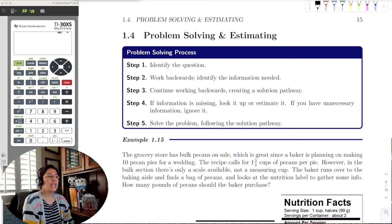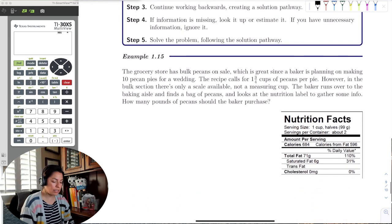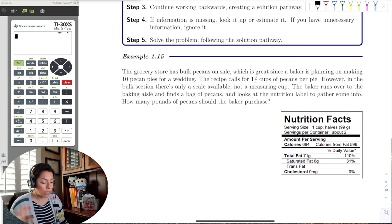So in this case, a grocery store has bulk pecans on sale, which is great since a baker is planning on making 10 pecan pies for a wedding. The recipe calls for 1 and 3/4 cups of pecans per pie. But when I go to the bulk section to purchase the pecans, everything's in pounds. There's no measuring cup.